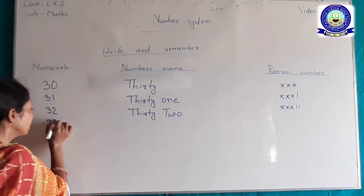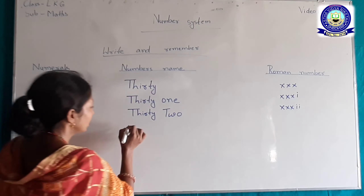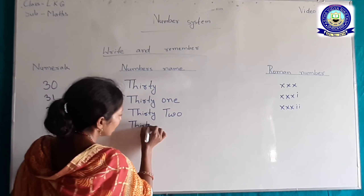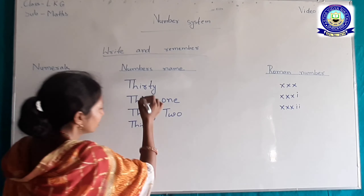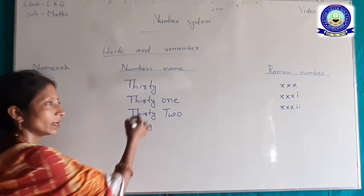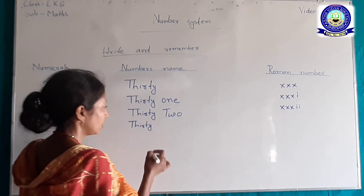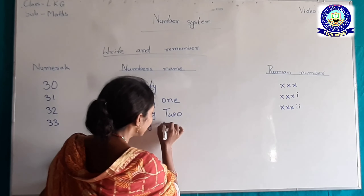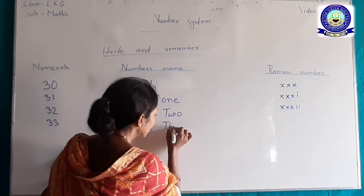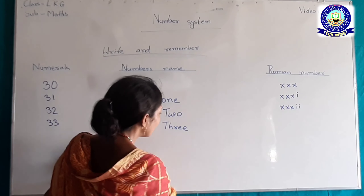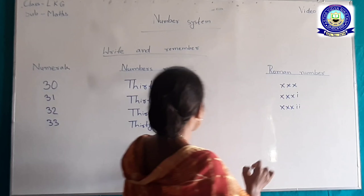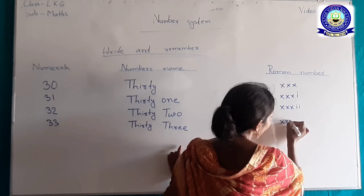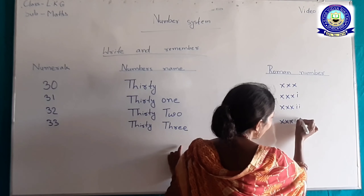33। 33 का word में लिखेंगे: T-H-I-R-T-Y, same 30 का, और THREE — T-H-R-E-E। 33 का Roman number: Triple X, Triple I — मतलब XXXIII।